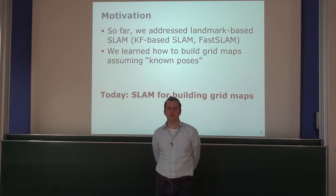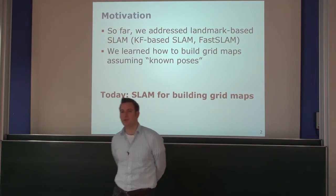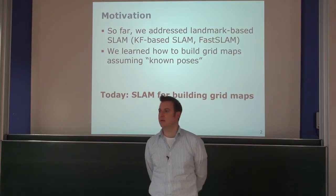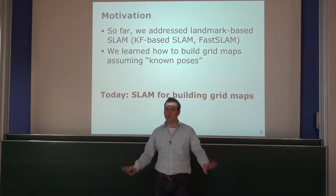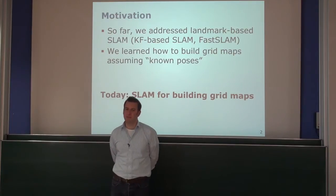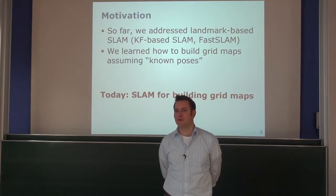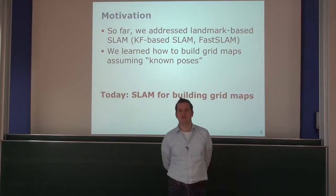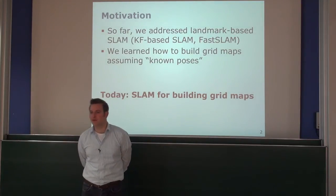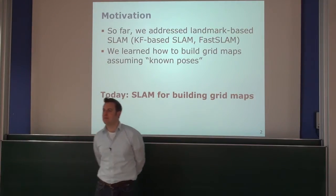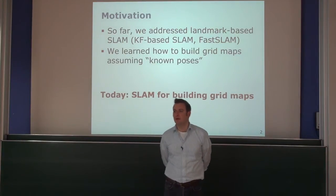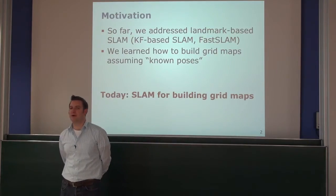Then we introduced particle filters, first for localization as one way to track the pose of the robot using a cloud of particles, where every particle is a pose hypothesis. Given a map of the environment, we could very effectively localize a robot. Last week we looked into FastSLAM for landmarks — the first particle filter-based approach to SLAM in the robotics community that worked efficiently on large-scale maps, up to a million landmarks. The key idea was to separate the estimation of the belief about the robot's trajectory and the map into two parts, using a particle filter to estimate only the trajectory.